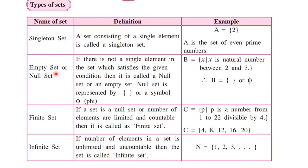Another set is empty set, which is also called null set. Empty means nothing; null means nothing. The set which does not contain any element — there is not a single element — is called a null set. It can be represented by giving only curly brackets, or by writing phi (∅) in it. This symbol is called phi.